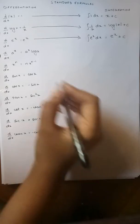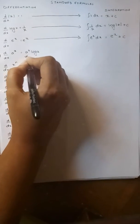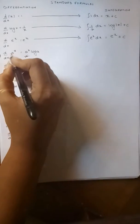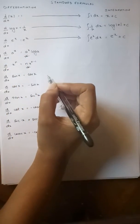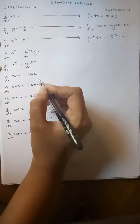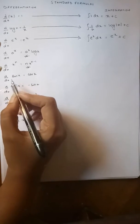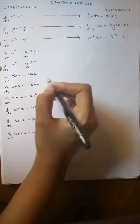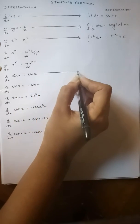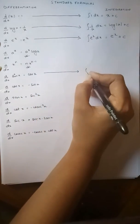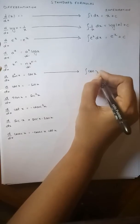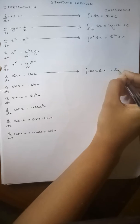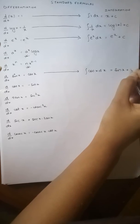Now I'm going to show you that these two formulas are a bit different, so let's skip them for a while and move on to the trig functions. As we can see, differentiation of sin x with respect to x will give us cos x. Therefore integration of cos x dx will give us sin x plus c.